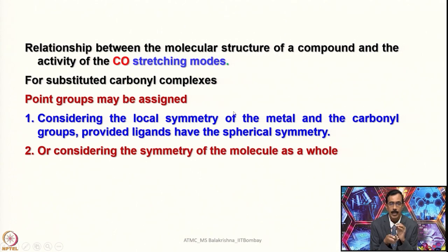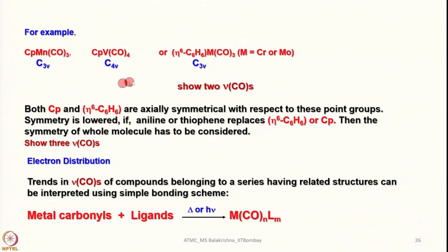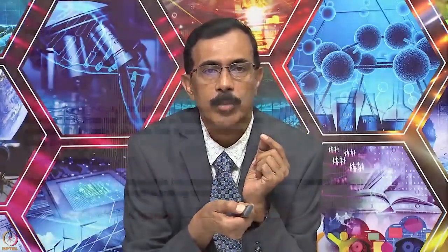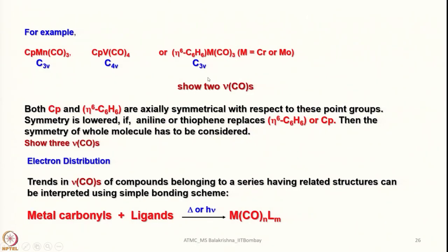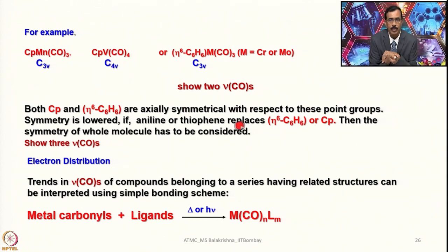Looking at a typical spectrum of formaldehyde: IR readings are inverted compared with UV-visible spectra. Peaks that show significant absorption dip downward, while those that do not absorb go flat. Each dip on the graph represents various bond characteristics, and because most functional groups have specific bonds they can be readily identified. For example, CpMn(CO)3 has C3v symmetry, CpV(CO)4 has C4v symmetry, and arene-M(CO)3 has C3v symmetry — all showing two CO stretching frequencies. Both Cp and benzene (arene) are axially symmetrical with respect to these point groups.